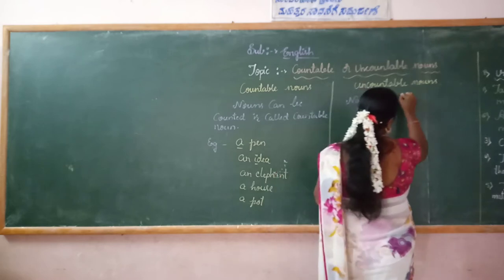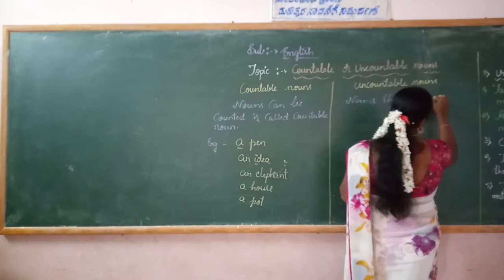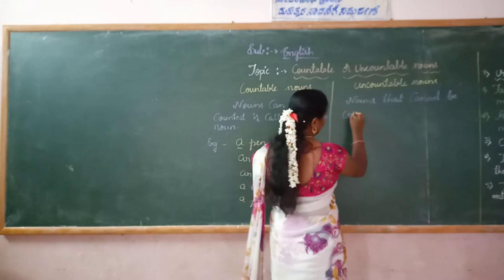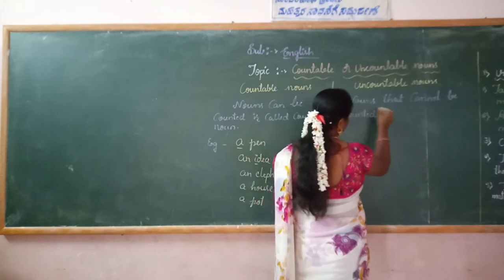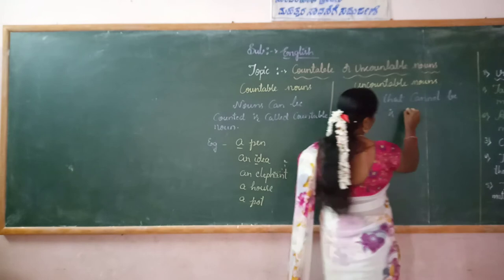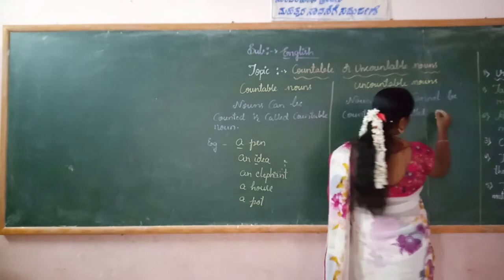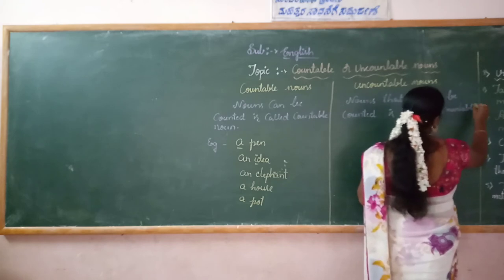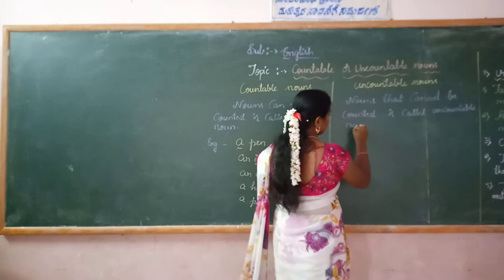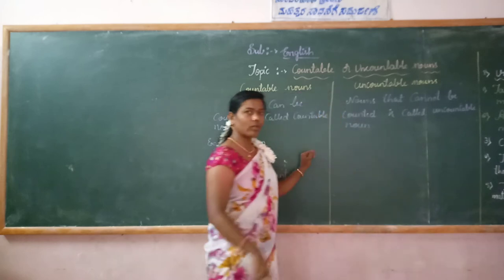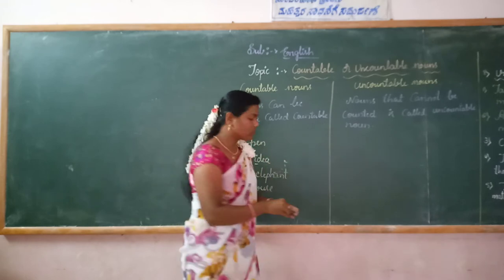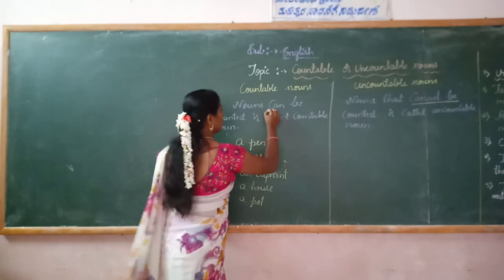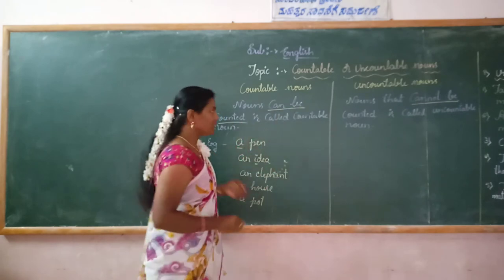Nouns that cannot be counted are called Uncountable Nouns. Which nouns can be counted — that is Countable Nouns. Which nouns cannot be counted — it is called Uncountable Nouns. Let us see the examples.